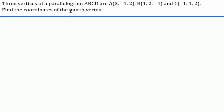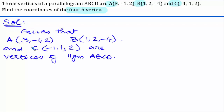In this question, we have to find out the fourth vertex of a parallelogram when three other vertices are given. It is given that A(3, -1, 2) and B(1, 2, -4) and C(-1, 1, 2) are the vertices of the parallelogram ABCD.